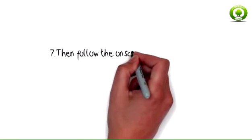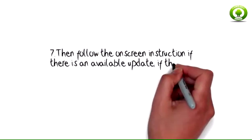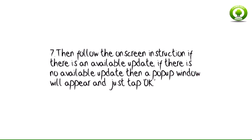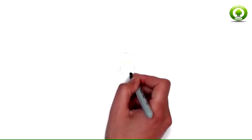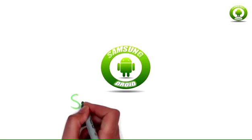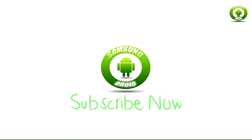Step 7: Then follow the on-screen instructions if there is an available update. If there is no available update, a pop-up window will appear — just tap OK. For other Samsung Galaxy S3 tips and repair guides, please subscribe to the Samsung Droid channel.